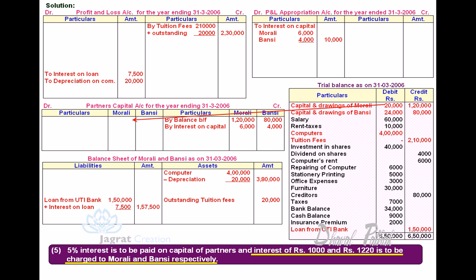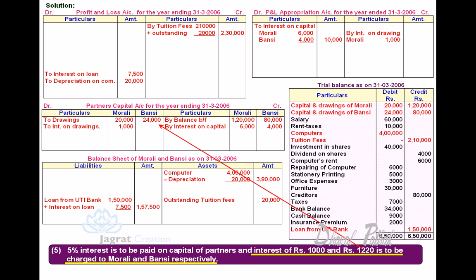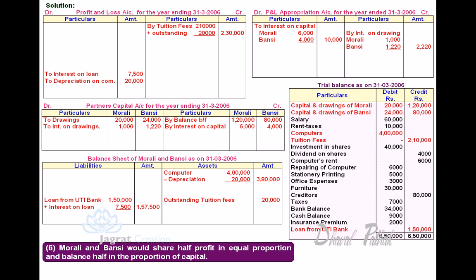Interest on Drawings — drawings of 20,000 and 24,000 — are debited to the Partners' Capital Accounts. Interest on Drawings is debited to Partners' Capital Account and credited to Profit and Loss Appropriation Account. For Bunsi, 1,220 is debited to Bunsi's Capital Account and credited to Profit and Loss Appropriation Account. Morley and Bunsi would share half the profit in equal proportion and the balance half in proportion of capital. Let's first find out the profit.